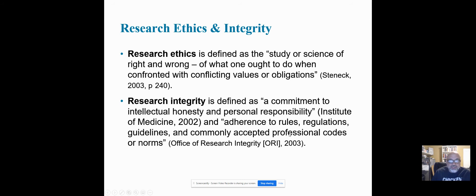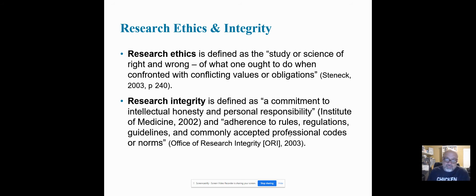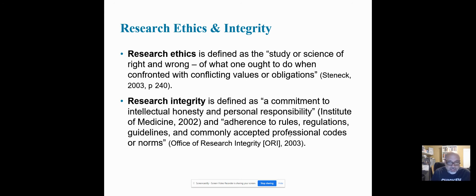Research ethics is defined as the study or science of right and wrong, and that's pretty much what it is — what you define as right and wrong. The problem is we're human beings, and some of us feel that things are right. If you look at our politics today, certain people believe something is right, and other people believe something is wrong, and there's a lot of gray areas in the middle. What research ethics tries to do is clear that gray area up and make sure that we're all on the same page when it comes to research ethics.